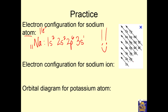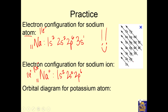Now let's do the electron configuration for a sodium ion. Sodium forms a +1 ion, which means it still has 11 protons in its nucleus but now only has 10 electrons — that's why it has a +1 charge. We do the same thing, but stop when we've used 10 electrons: 1s2, 2s2, 2p6. Done — that's 10 electrons, so this is the sodium ion, which is a cation.